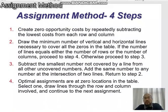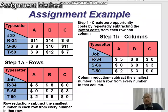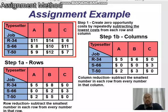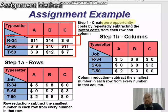Going back to the example, we have three jobs to assign to three typesetters. In step one, we create the zero opportunity cost starting with row reduction. In the first row, between $11, $14, and $6, the minimum is $6. So: 11 minus 6 equals 5, 14 minus 6 equals 8, and 6 minus 6 equals 0.